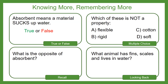Let's get our checking pens out to see how we did. Absorbent means a material sucks up water — that would be false. The correct word is 'soak.' Remember, we're soaking up the water, not sucking it up. Which of these is not a property? Cotton is actually a material, not a property. Well done those of you who said cotton.